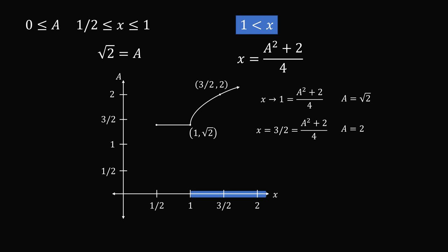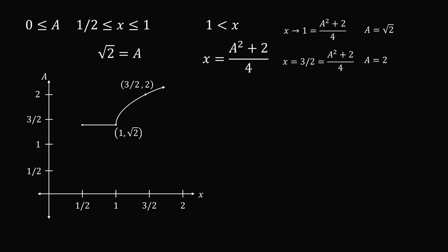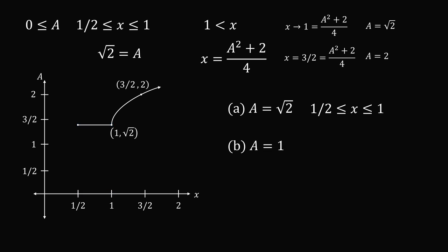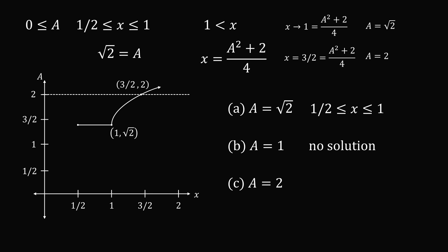Now that we have this graph, we can solve the problem. Part a: a equals square root of 2. We mark the line a equals square root of 2 and see it corresponds to x in the interval 1 half less than or equal to x less than or equal to 1. That's the answer to part a. Part b: a equals 1. This line does not intersect the graph of the function, so there is no solution — no value of x for which this is true. Finally, part c: a equals 2. There is exactly one intersection, so x equals 3 over 2. That's the answer to this question.